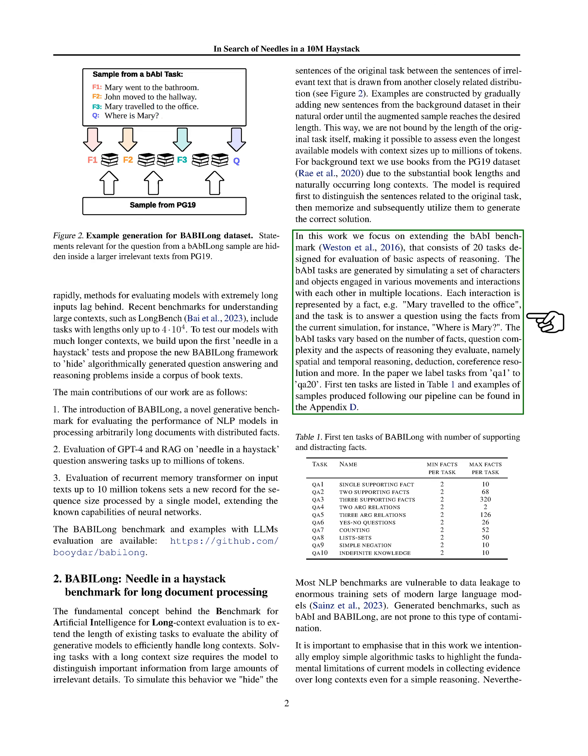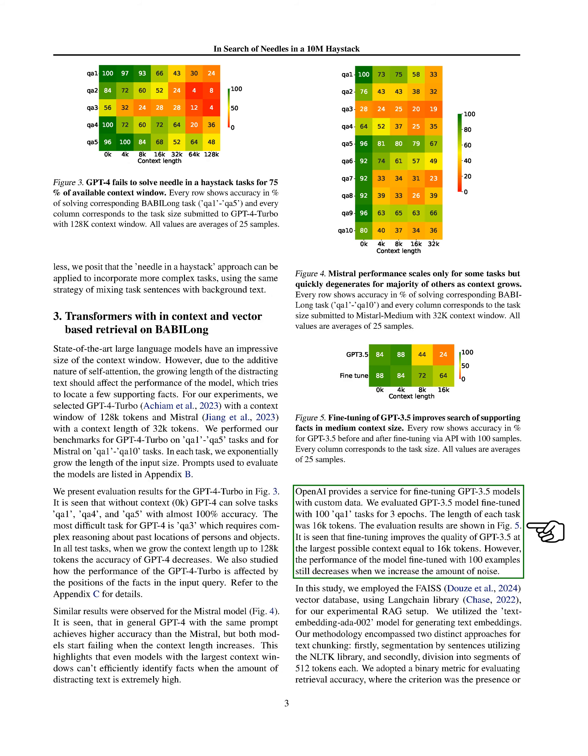In our experiments with state-of-the-art large language models, we observe that even models with large context windows struggle to identify relevant facts amidst a sea of distracting text. We explore the performance of GPT-4 Turbo and Mistral models on various tasks, noting a decrease in accuracy as the context length increases. Our study also involves fine-tuning a GPT-3.5 model and evaluating its performance, which shows improvement but still faces challenges with increased noise.